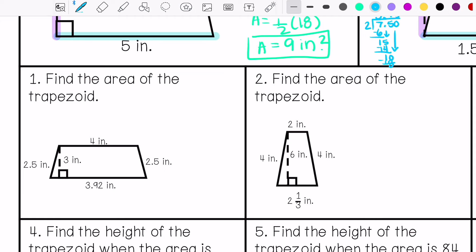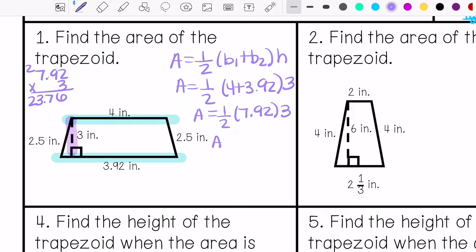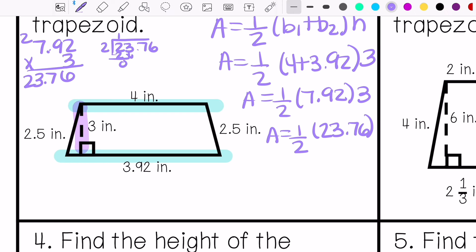Alright, number one says find the area of the trapezoid. I'm going to identify my height and the two bases. Write my formula. So area equals 11.88 inches squared.